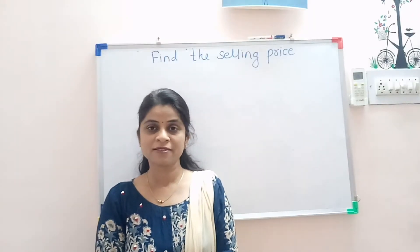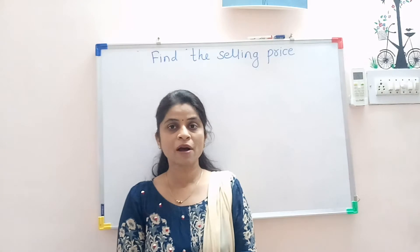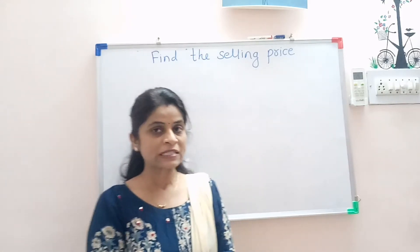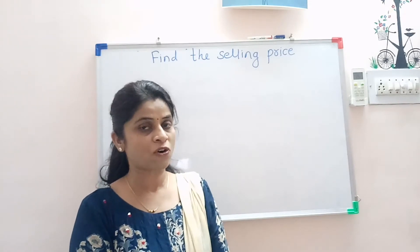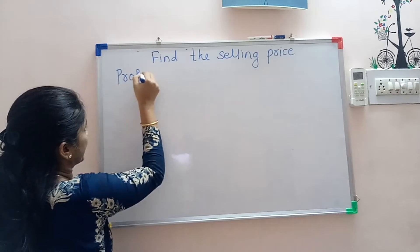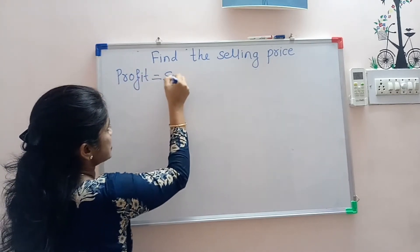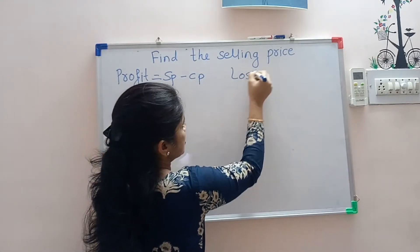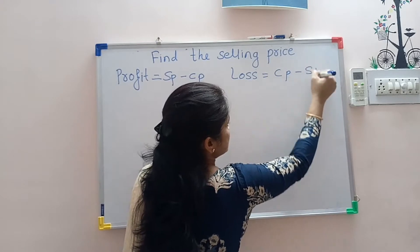Vande Mataram students. Today we are going to learn about how to find the selling price. We know the two formulas for profit and loss: profit is equal to selling price minus cost price, and loss is equal to cost price minus selling price.